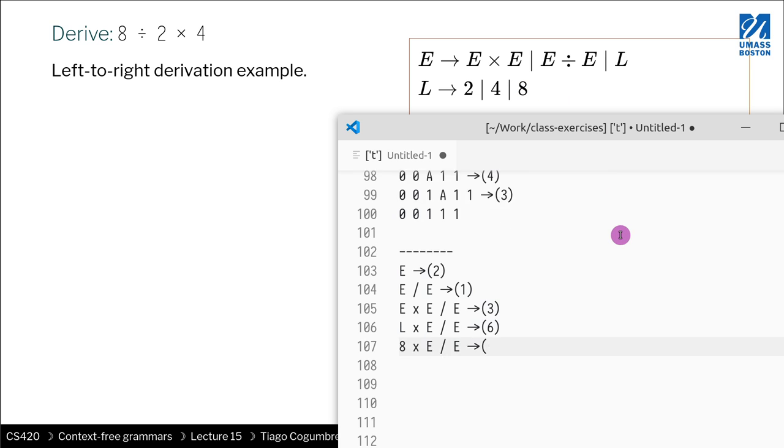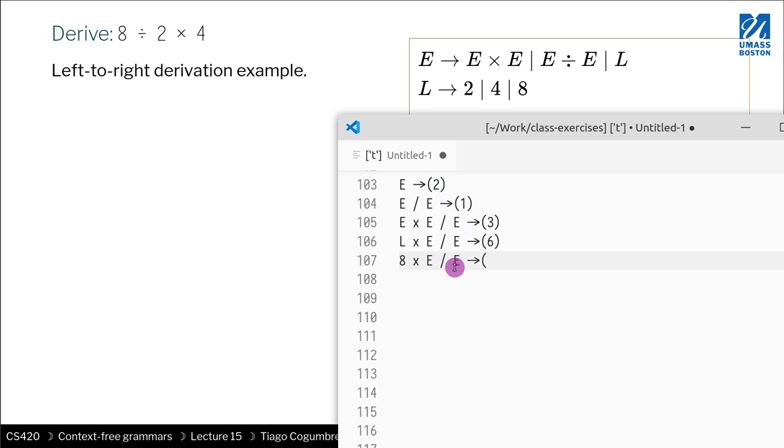Now what I want to do is replace this E by L. So we're going to use rule three again. You have eight times L divided by E. And then using rule four, we have eight times two divided by E. And then we want to replace E by L. So replacing E by L would be rule three, eight times two divided by L.